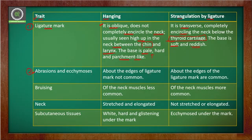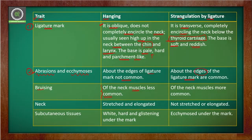The second point covers abrasion and ecchymosis. Above the edges of ligature marks, abrasion marks and ecchymosis marks are not common in hanging. However, in ligature strangulation, these marks are more common around the edges of the ligature. Additionally, bruising on the neck muscles is less common in hanging, whereas in ligature strangulation the muscles are commonly bruised.